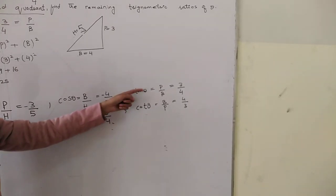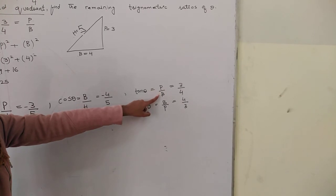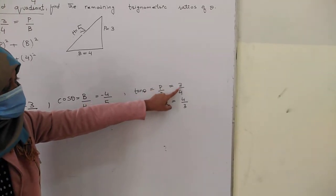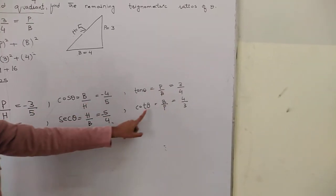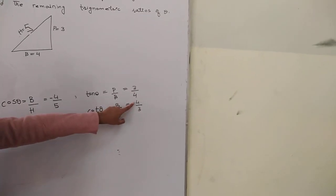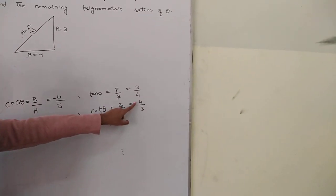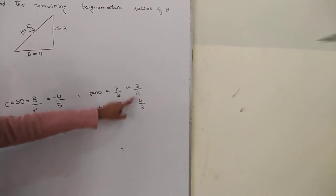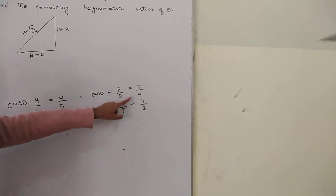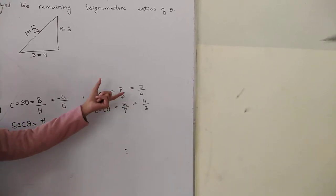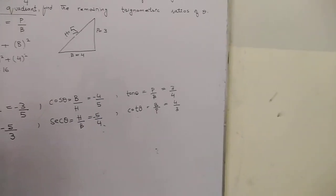Next up is tangent. It is perpendicular over base. Perpendicular is 3 and base is 4, so 3/4. Cotangent is 4/3. And tangent is positive because in the third quadrant, tangent is positive.